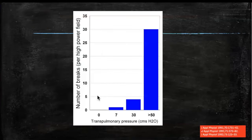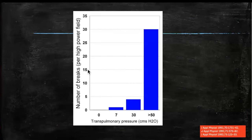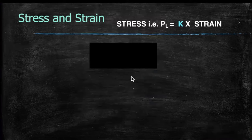Studies have shown that when trans-pulmonary pressure is roughly around 7 there are very few membrane breaks per high-power field, but when trans-pulmonary pressure is around 30 there is a significantly higher number of breaks per high-power field. Stress and strain are mathematically related.